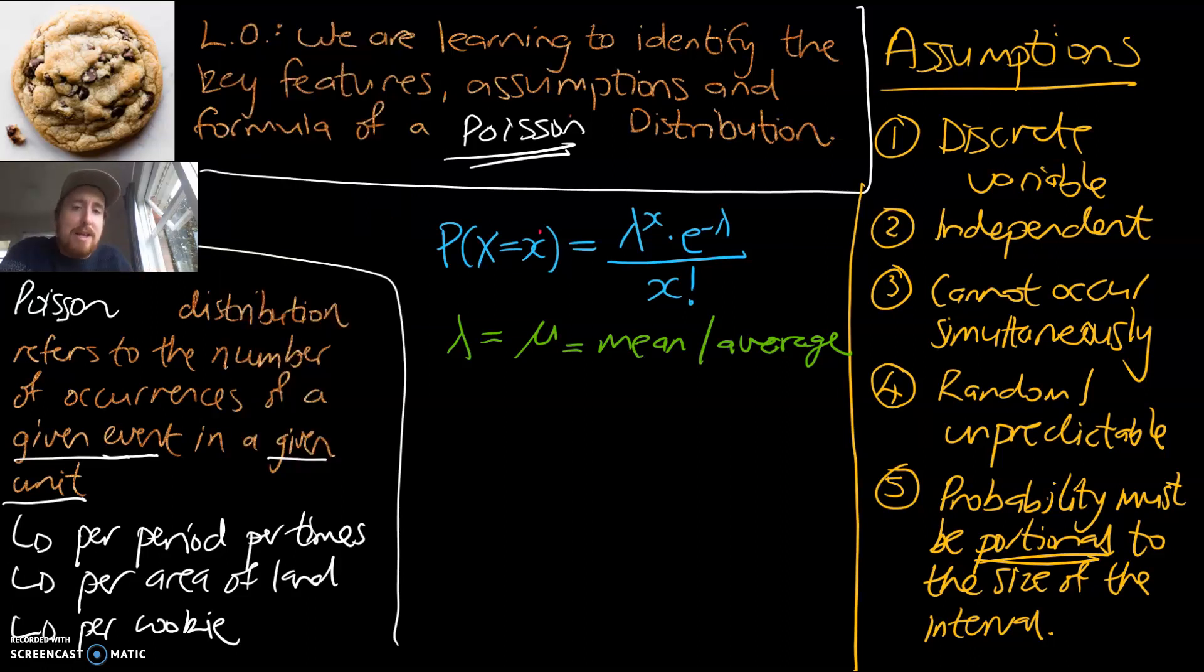The next one we want to look at is we can see that little x comes up three times. And that relates to the number of occurrences that you're interested in. So for example, if you're wondering how many chocolate chips are in that cookie, what's the probability that there's going to be exactly four chocolate chips in that cookie? The x would be four because you're interested in how many times four chocolate chips pop up.